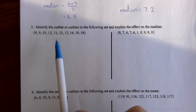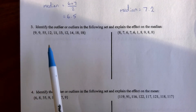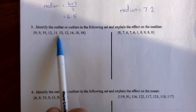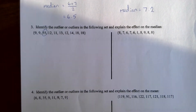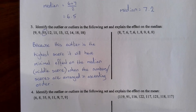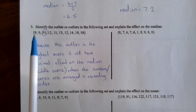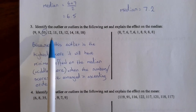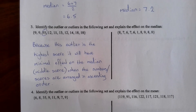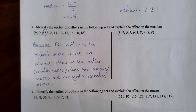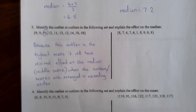Question 3a asks us to identify an outlier — a number that doesn't really fit. Looking at the data, 55 stands out straight away as it's the largest number by a long way. The question then asks about the effect on the median. Because 55 is the highest score, it will have a minimal impact on the median. Once arranged in order, it won't alter the position of the middle score, making the median a better measure than the mean here.